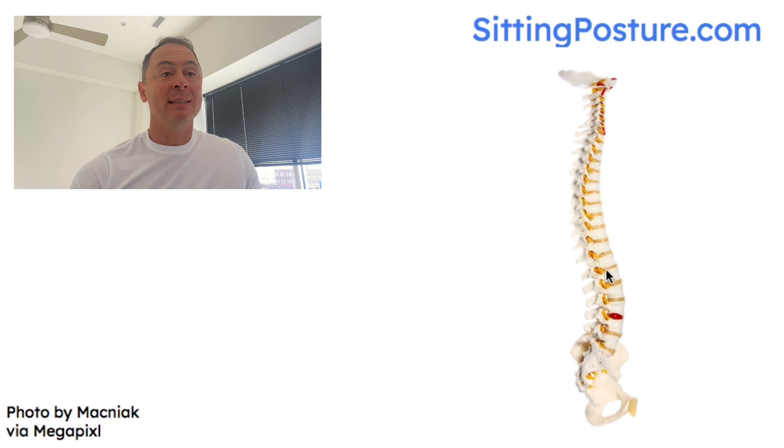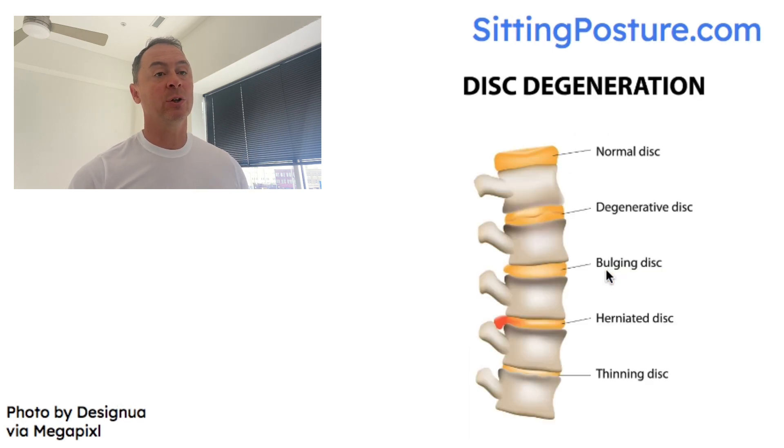So it's best that we sit with this natural position as much as possible. When we start to slouch forward, that's when we lose this natural position and we don't sit with the curves in the spine.